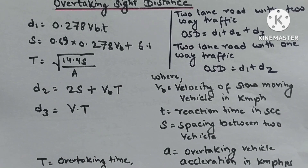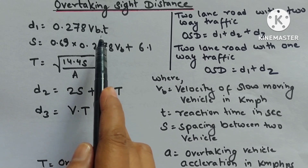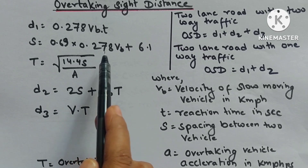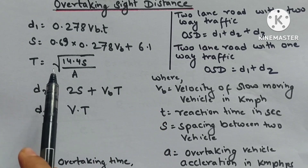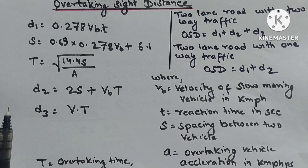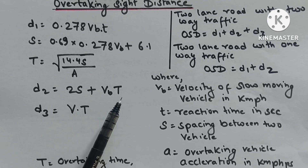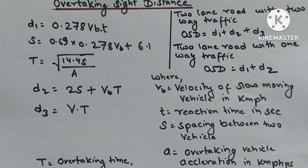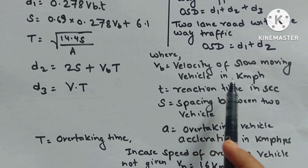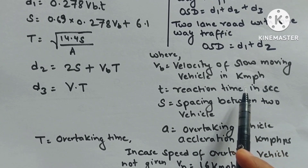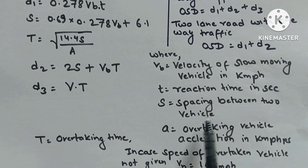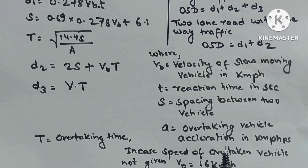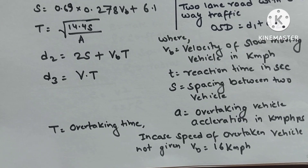Overtaking sight distance: d₁ = 0.278 Vb·T, S = 0.692 × 0.278 Vb, d₂ = 2S + Vb·T, where t = 14.4√(S/a) on the road, d₃ = V·T. Here Vb is velocity of slow-moving vehicle in km/h, T is reaction time, S is spacing between vehicles, a is overtaking vehicle acceleration, and t is overtaking time.